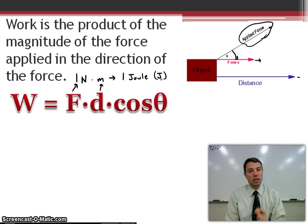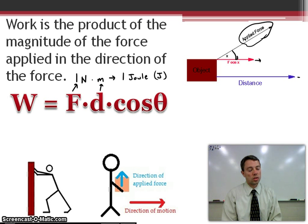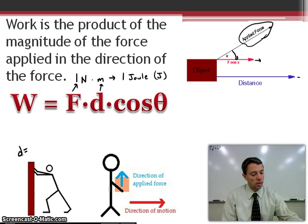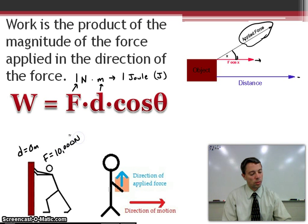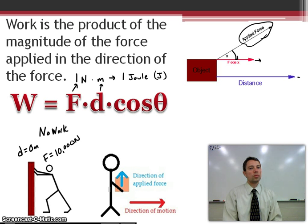The big thing is knowing that the distance and the force have to be applied in the same direction. Here I have two situations. I have a stick figure pushing on a wall with a lot of force — we can measure how much force — but the wall's not moving. So displacement is zero meters, even though the force may be something like 10,000 newtons. So this would say no work is done on the wall, even though we're expelling a lot of force. If the object doesn't move, no work can be done.